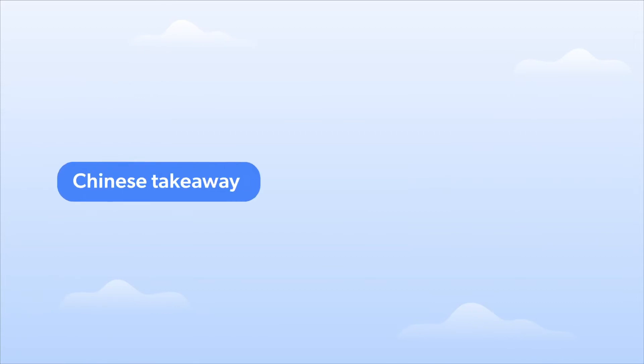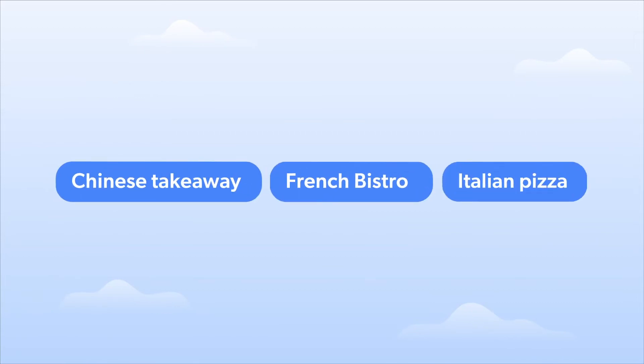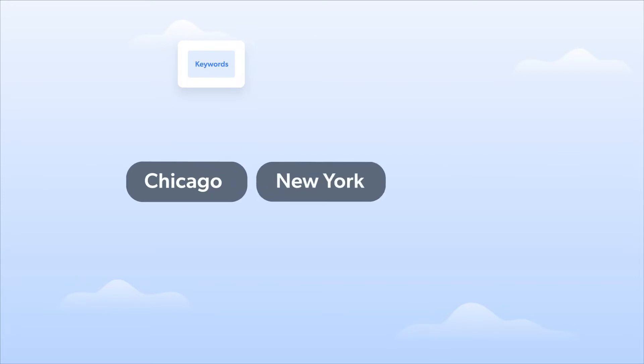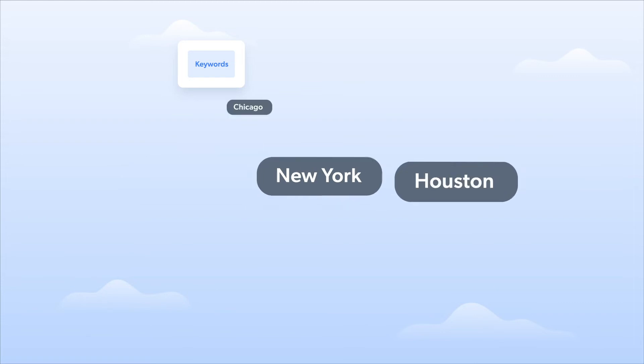Step number one: input the keywords you are targeting — Chinese takeaway, French bistro, or Italian pizza. Step number two: choose the locations you are interested in — Chicago, New York, or Houston — as well as the web domain, say search engine dot com.